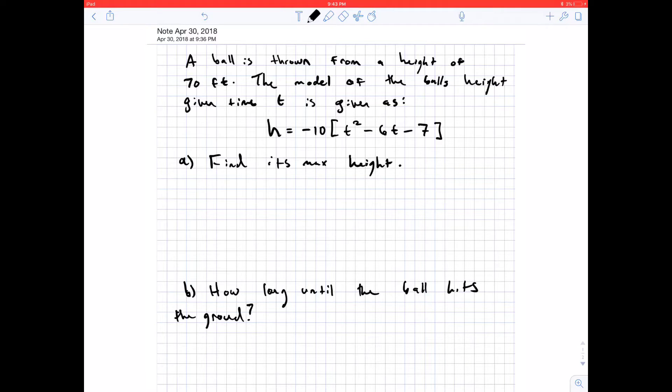So let's just go ahead and read what's given to us. We have that a ball is thrown from a height of 70 feet. The model of the ball's height given time t is given as this equation here.